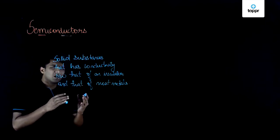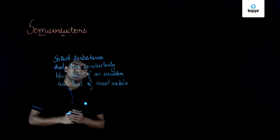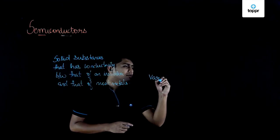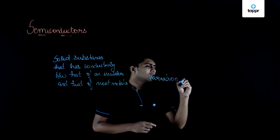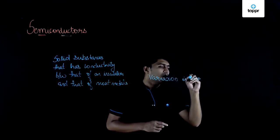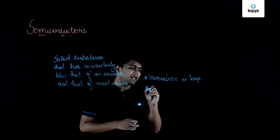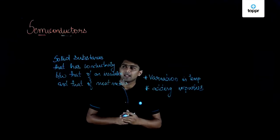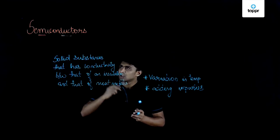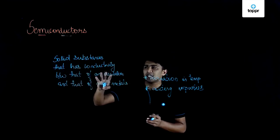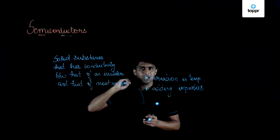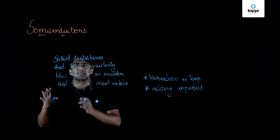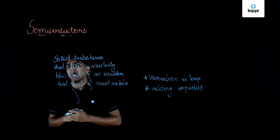Now think about how a substance can be neither a conductor nor an insulator. It happens when there is a variation in temperature or by adding impurities. These are the two factors which determine semiconductor behavior — variation in temperature and adding impurities.